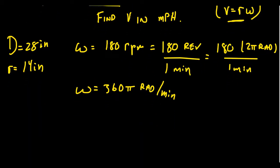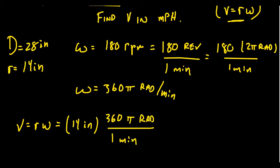V is going to equal R times ω, which R was 14 inches. And ω is 360π radians per one minute of time. So let's first figure out how we deal with the time, right? We don't want minutes. We want hours. So we want to have one hour in the denominator.